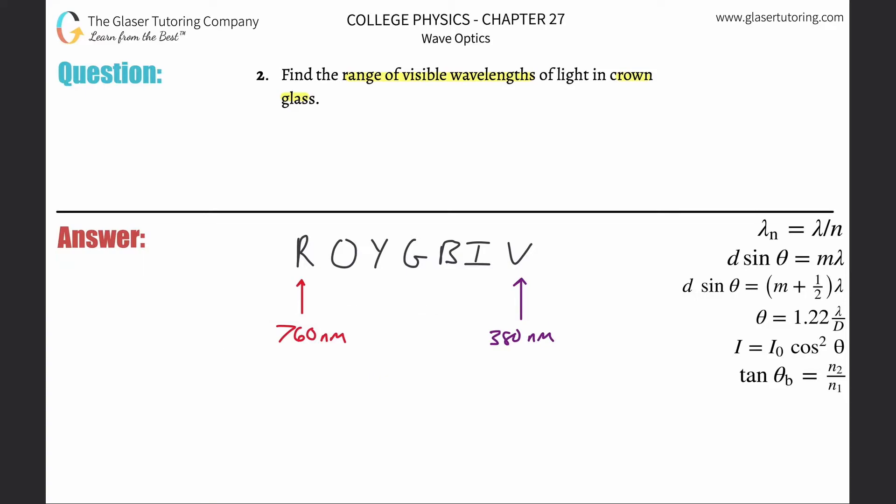Now, in order to find the wavelength in a particular medium such as crown glass, I need to know the index of refraction of that crown glass because the wavelength changes.